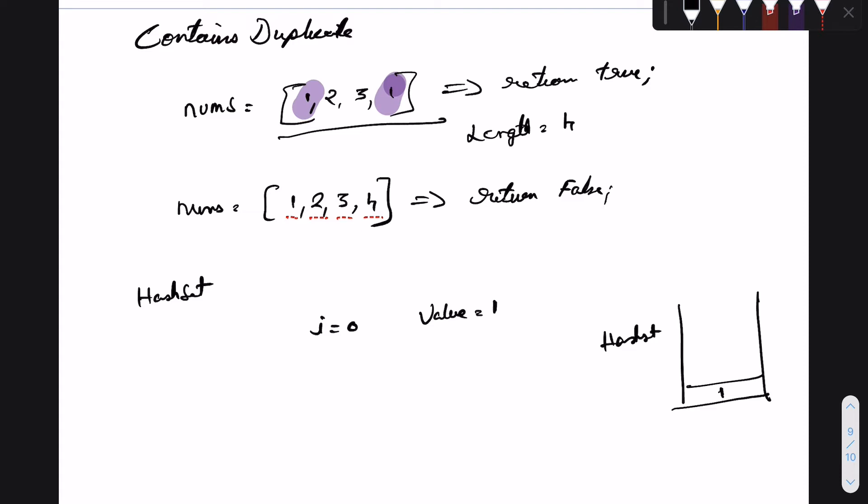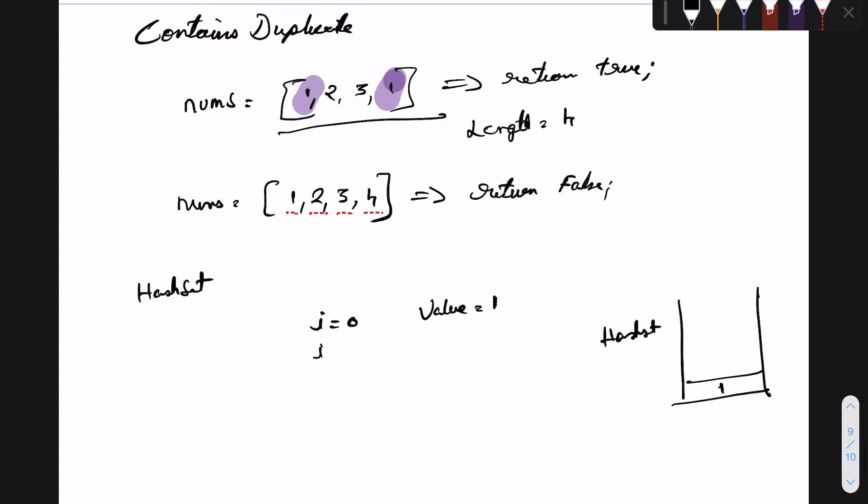Now we move on to the next iteration which would bring us to i equal to 1, and the value would be 2 for this specific index. As before, we check inside the hash set if the specific value is present. Since in this case it is not, we add it to the hash set.